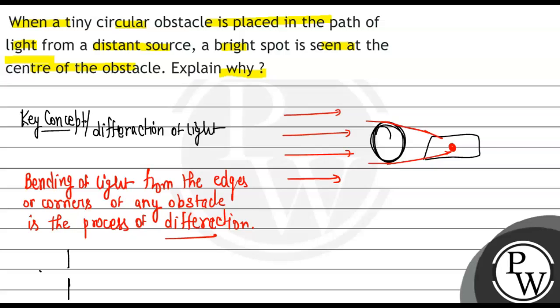So when diffraction occurs, a central bright fringe forms at the center. This is due to diffraction.